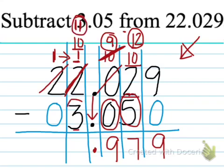So, 11 subtract 3 is 8, and then 1 subtract 0 is 1.